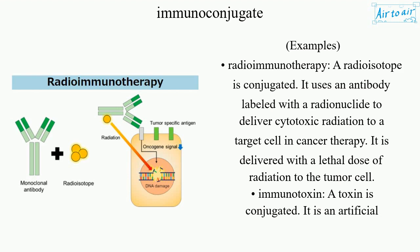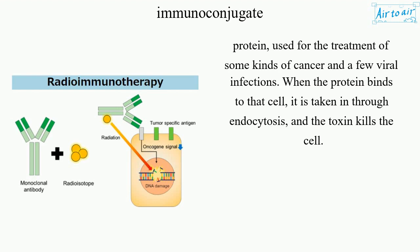Immunotoxin: a toxin is conjugated. It is an artificial protein used for the treatment of some kinds of cancer and a few viral infections. When the protein binds to that cell, it is taken in through endocytosis, and the toxin kills the cell.